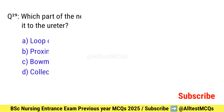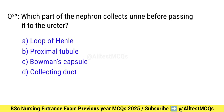Question number 29. Which part of the nephron collects urine before passing it into the ureter? Right option is D: Collecting duct.